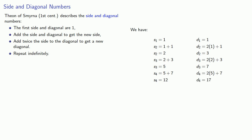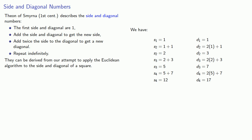There are many questions we can ask about the side and diagonal numbers: How did they find this relationship? What were they used for? Were they used at all? And the answer to all of these questions is we don't actually know. However, they can be derived from our attempt to apply the Euclidean algorithm to the side and diagonal of a square.